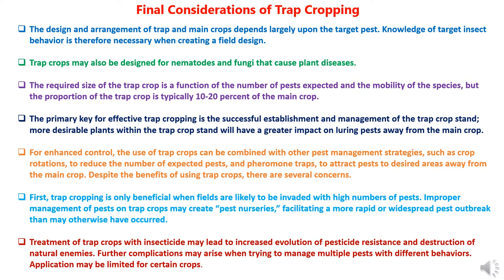Considerations regarding trap cropping: The design and arrangement of trap and main crops depends largely upon the target pest. Knowledge of target insect behavior is necessary when creating a field design. Trap crops may also be designed for nematodes and fungi that cause plant diseases. The required size of the trap crop is a function of the number of pests expected and the mobility of the species, but production of the trap crop is typically 10 to 20% of the main crop. The primary key for effective trap cropping is the successful establishment and management of the trap crop stand.